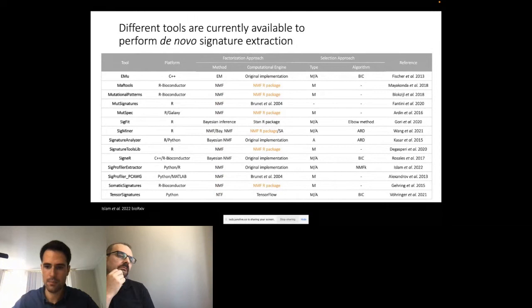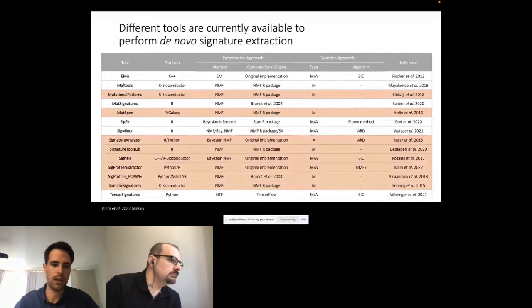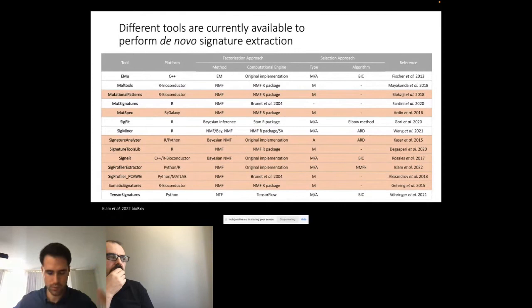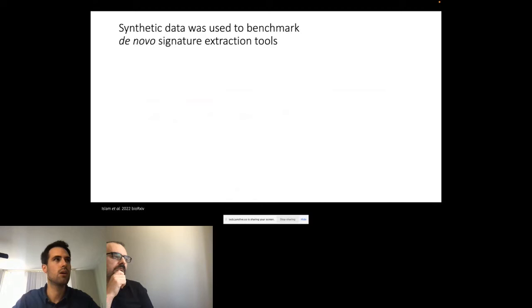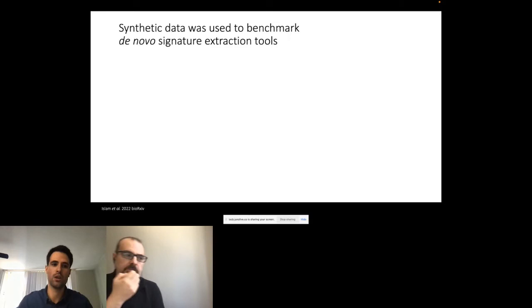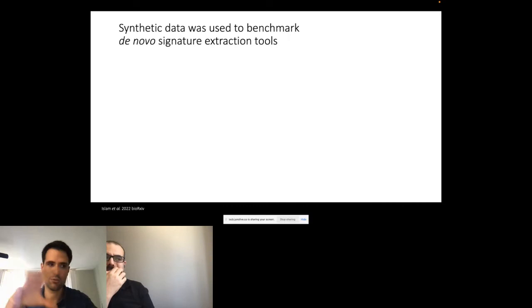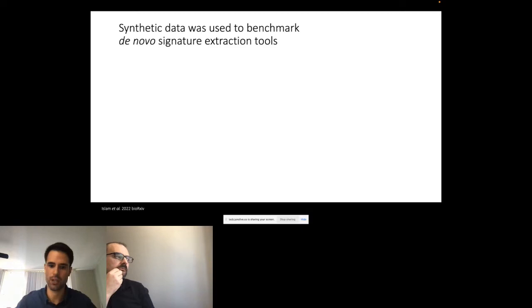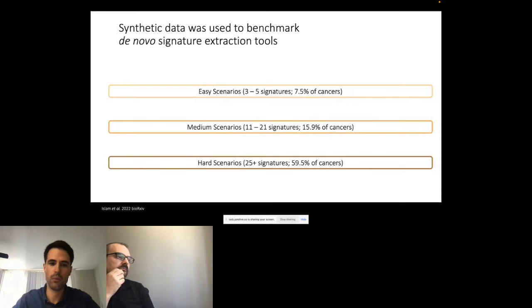Most of these tools were published in recent years. We performed more in-depth analysis on eight top-performing tools; we did an initial analysis across all tools and then focused on the top performers due to computational resource constraints. Benchmarking in mutational signatures is tricky because you don't have a ground truth — you don't know the signatures or processes causing mutations in those samples. So you need to use synthetic data: you take your reference signatures and, using activities derived from previous data, construct synthetic genomes or synthetic exomes. We did this in different scenarios labeled easy, medium, or hard depending on the number of reference signatures used.